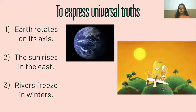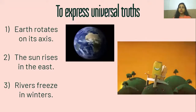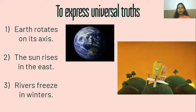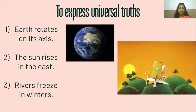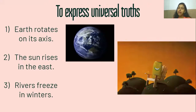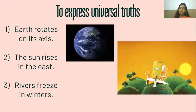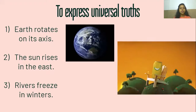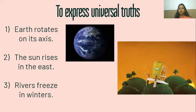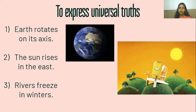Next, the simple present tense is also used to express universal truths — things that are true for the entire world. For example: Earth rotates on its axis; the Sun rises in the east and sets in the west; rivers freeze in winter. All of these are things that are universally true, so they are expressed using the simple present tense.